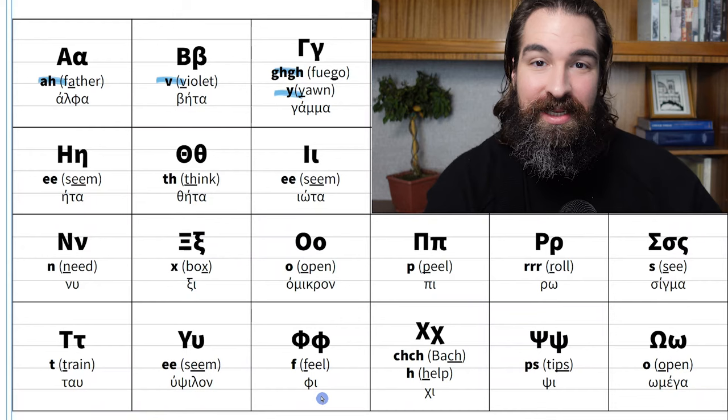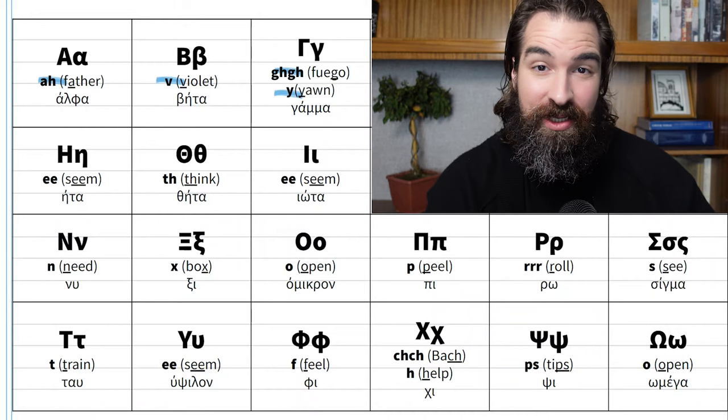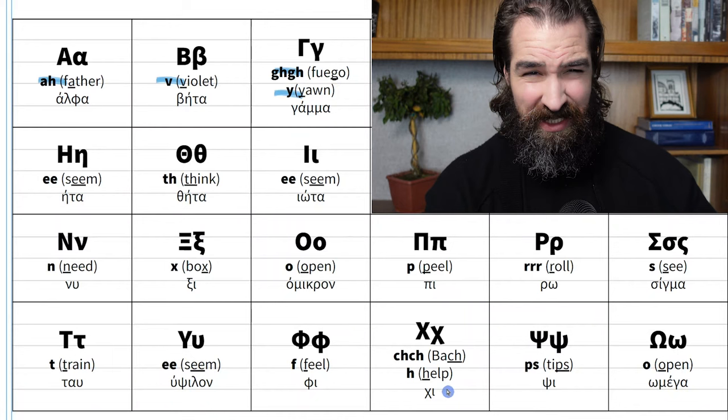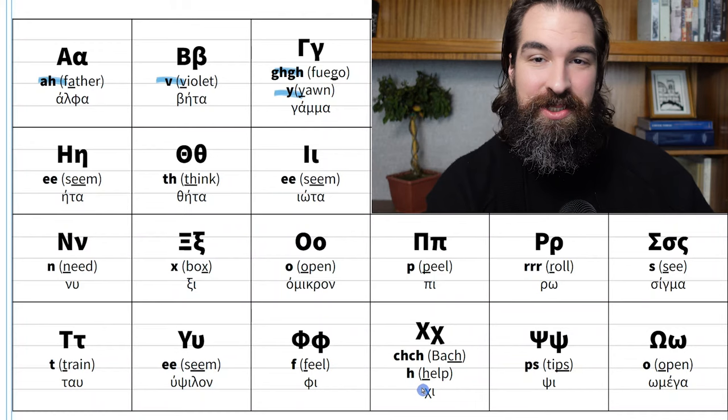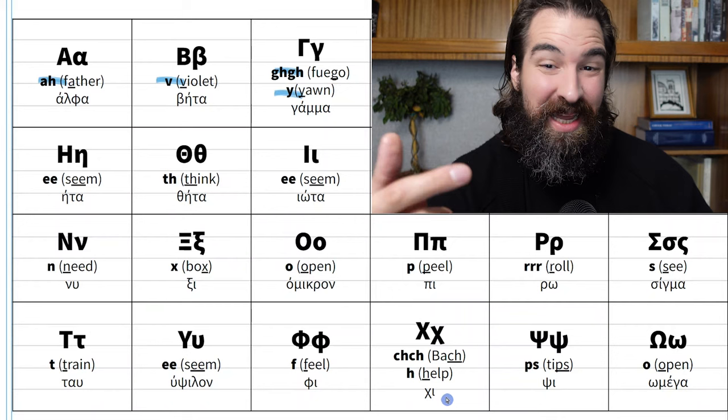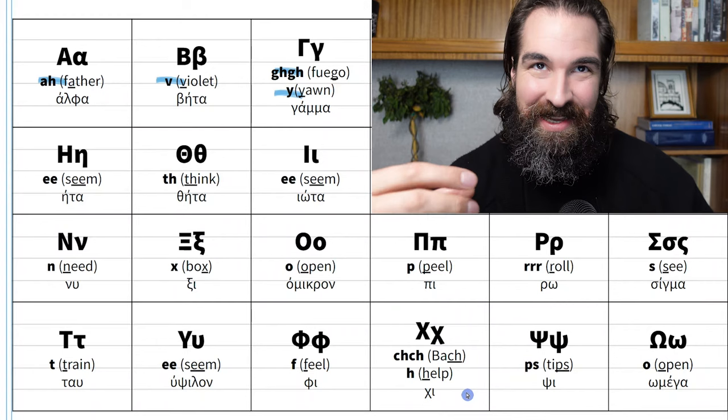The next letter is the Greek F — it's called phi — and it makes an F sound just like English 'feel.' Then we have chi. Chi is a bit like gamma in that there are two versions: one caught in your throat, like the 'ch' in the word 'Bach,' and the not-stuck-in-your-throat version, which is just like an H. The chi sound makes either a 'ch' or an 'h,' and it will be easier to learn in context inside a word.